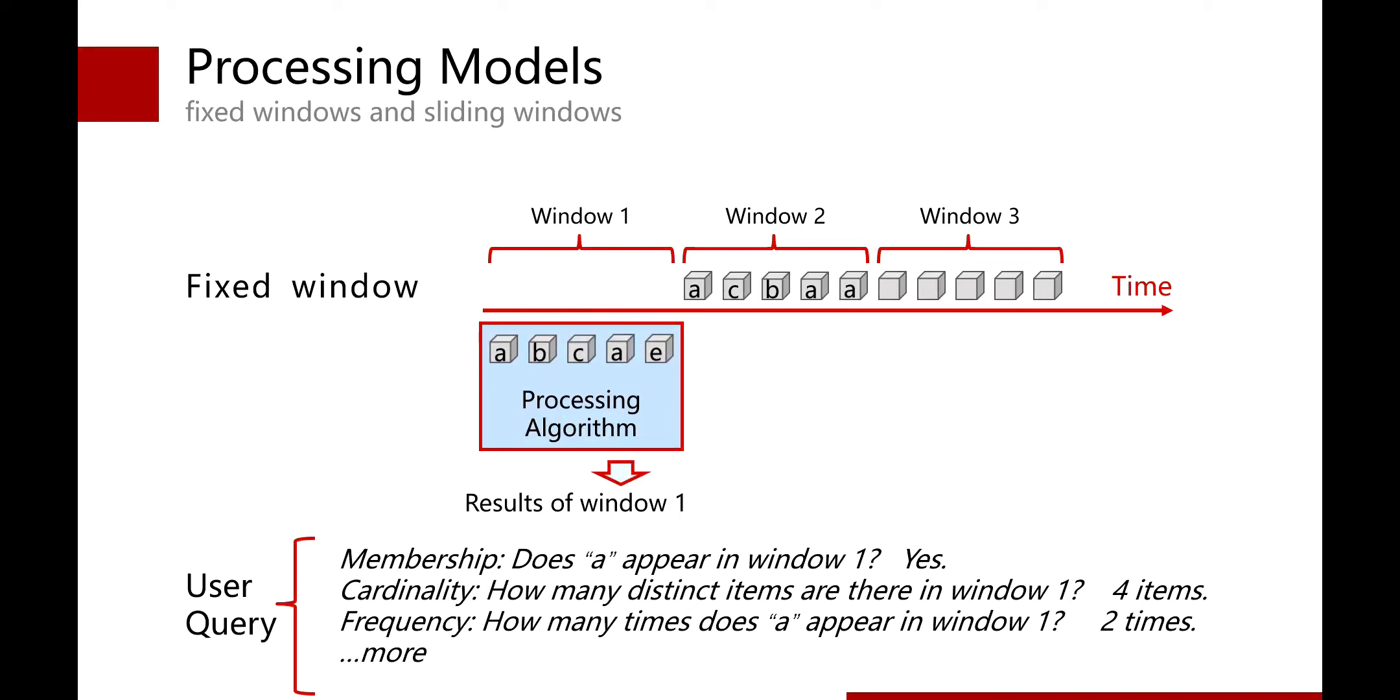For membership, item A did appear in window 1. And there are four distinct items in window 1, and item A appears two times. After the report, algorithms and data structures in the processing platform are reset to zero. Then, the new items in the next window will be inserted.